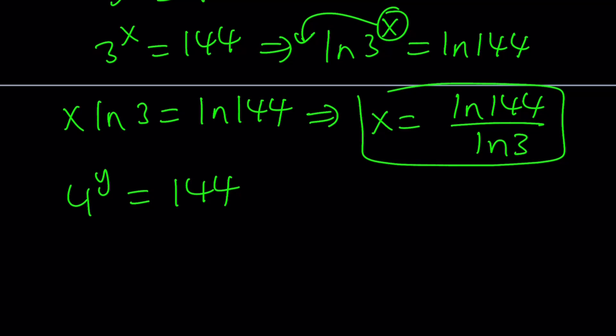And we can do the same thing for y. To keep a long story short, we can ln both sides. We're going to get y ln 4 equals ln 144. From here, y is going to become ln 144 divided by ln 4.